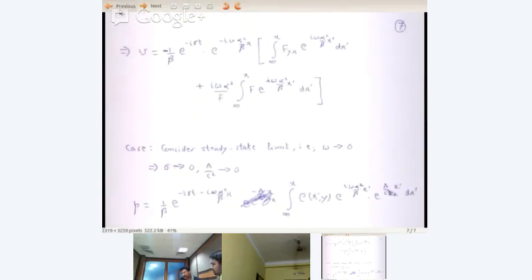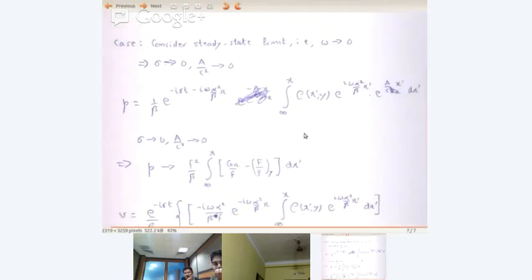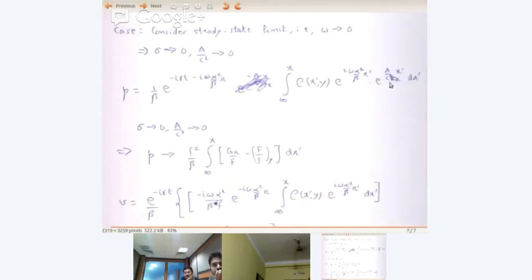No, I don't think that is right. Yeah, it was minus i k x prime. So that term is not there. There is an error here. This will simply be e power i omega alpha squared by beta x prime. This term is not there, e power A by C squared CR into x prime. Because you have omega here, this term is not there.